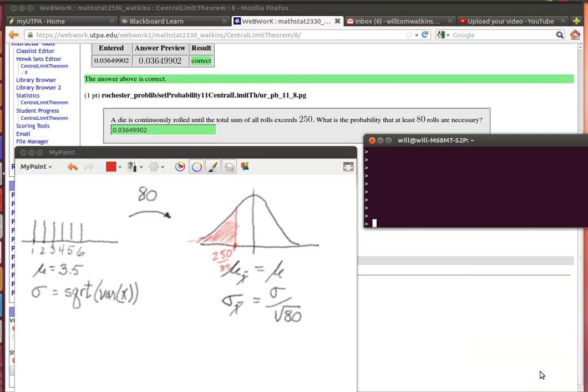Here we're looking at problem number 8 in the Central Limit Theorem homework. We're going to use R to help us do that calculation.